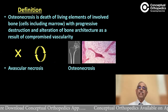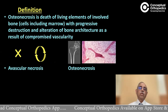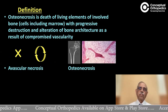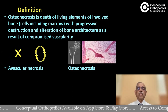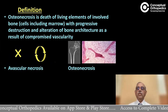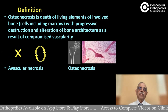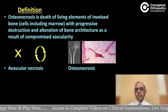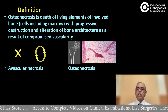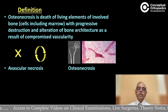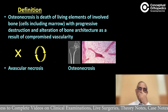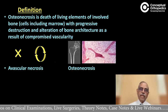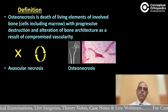Osteonecrosis is the death of living elements involving the bone — the cells including the marrow — with progressive destruction and alteration of bone architecture as a result of compromised vascularity. As you can appreciate in the radiological and histological pictures shown here, there is progressive destruction and alteration of bone architecture, and that is the classical avascular necrosis.